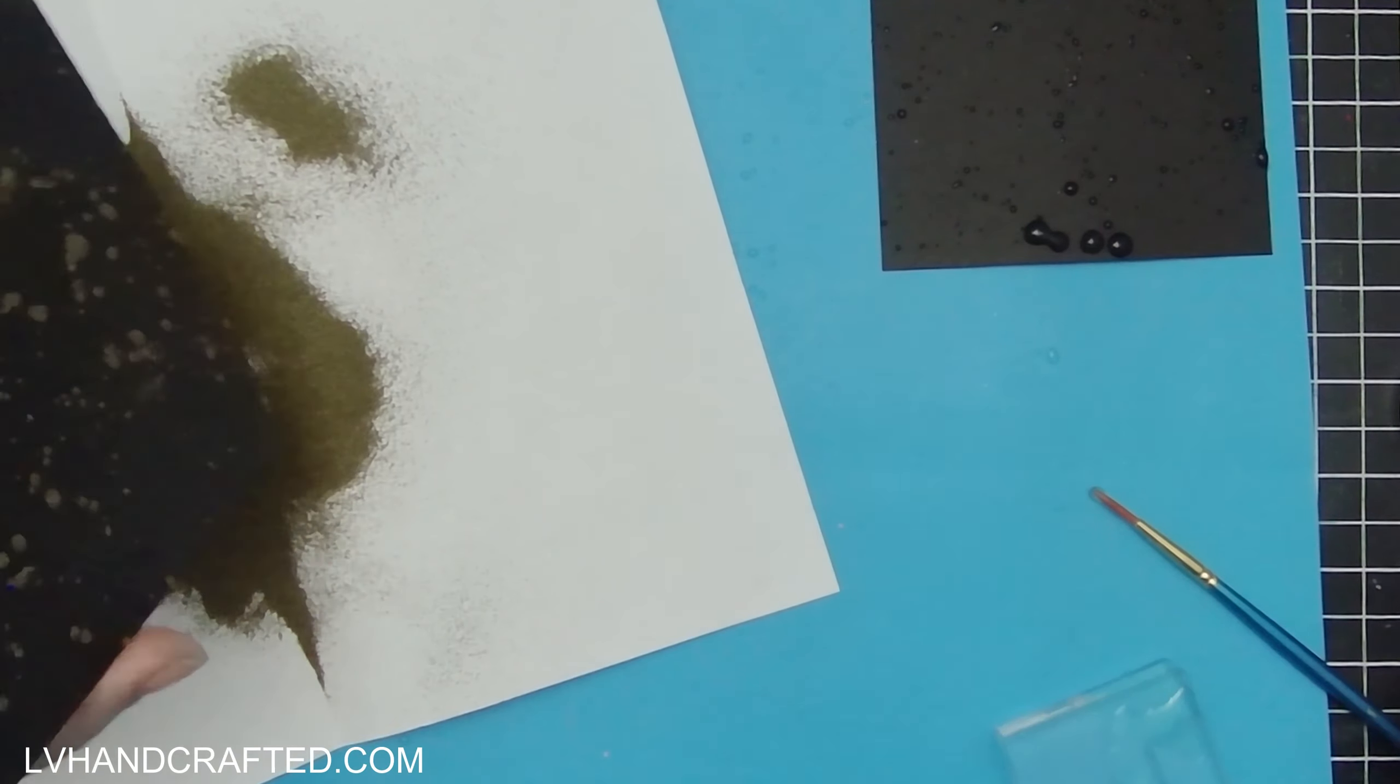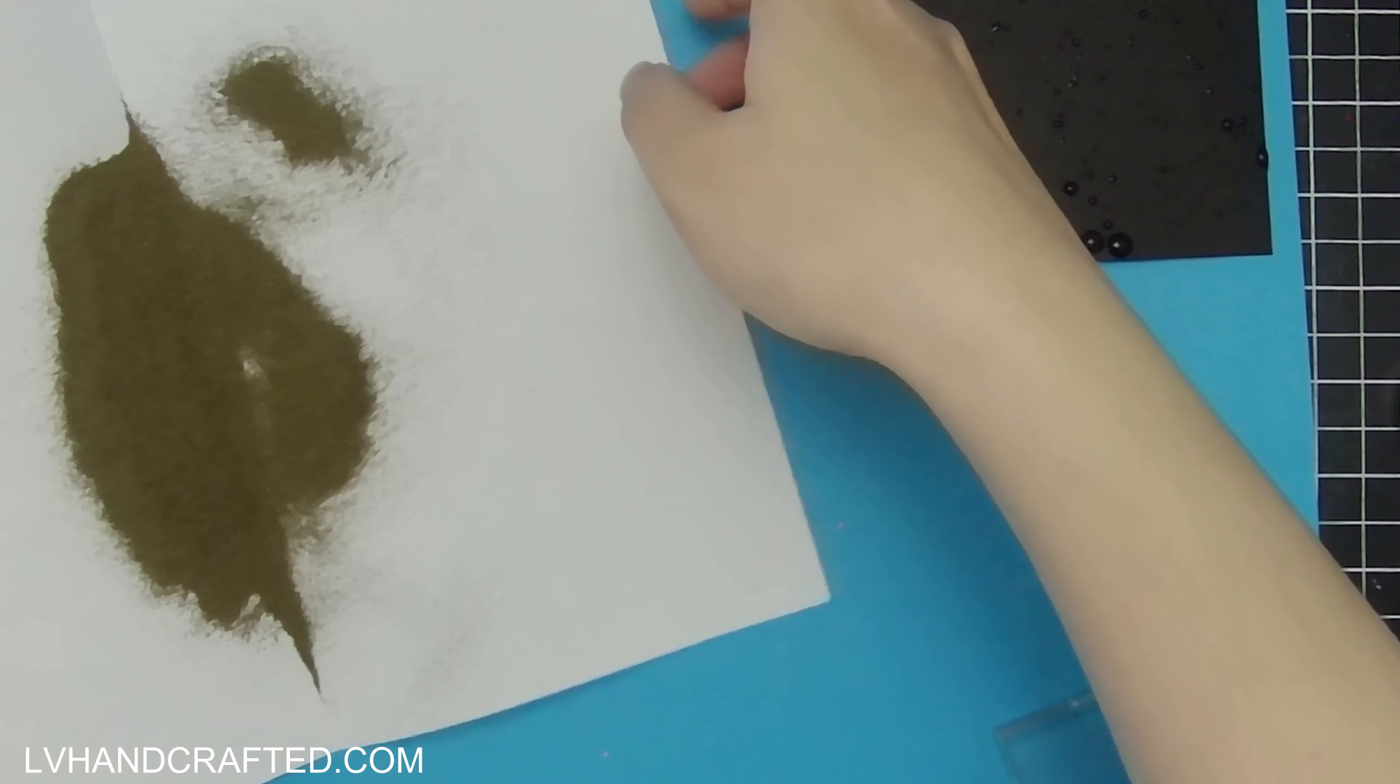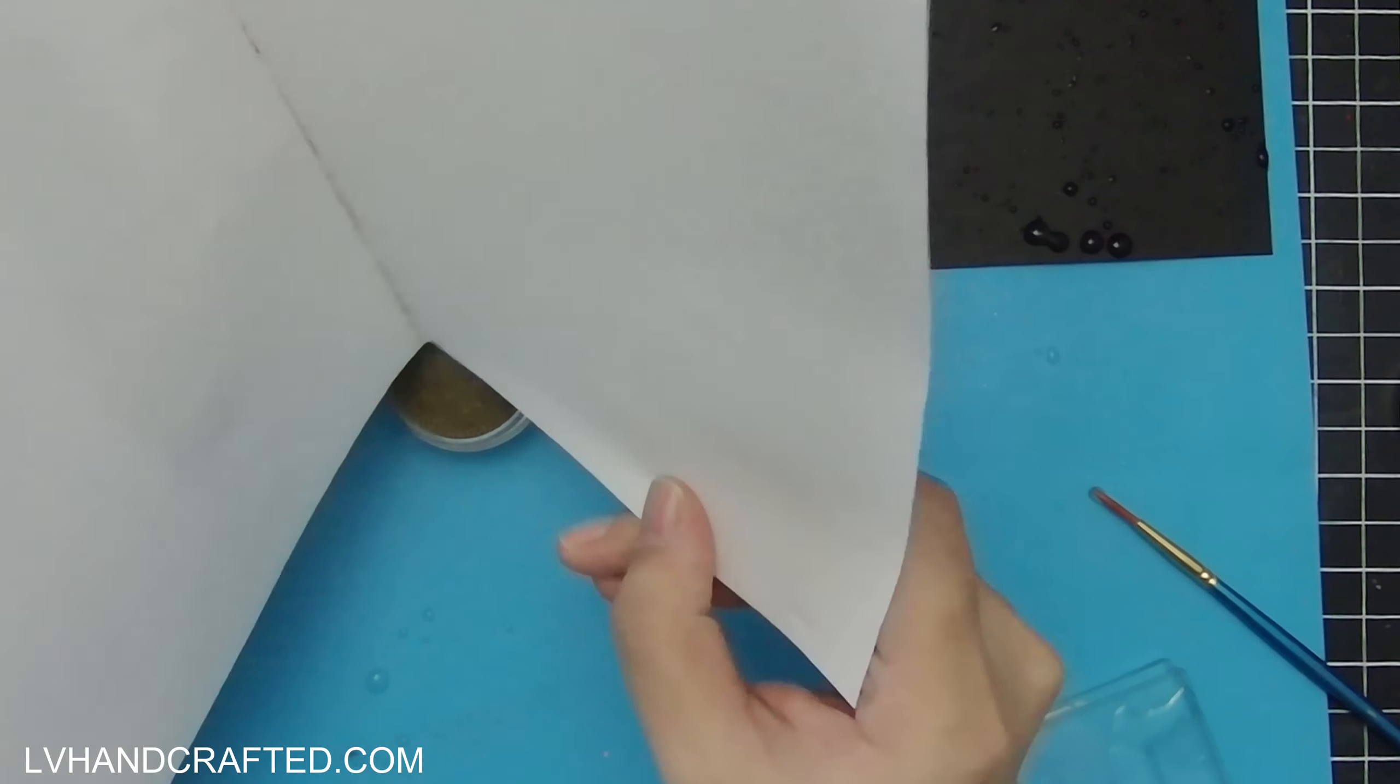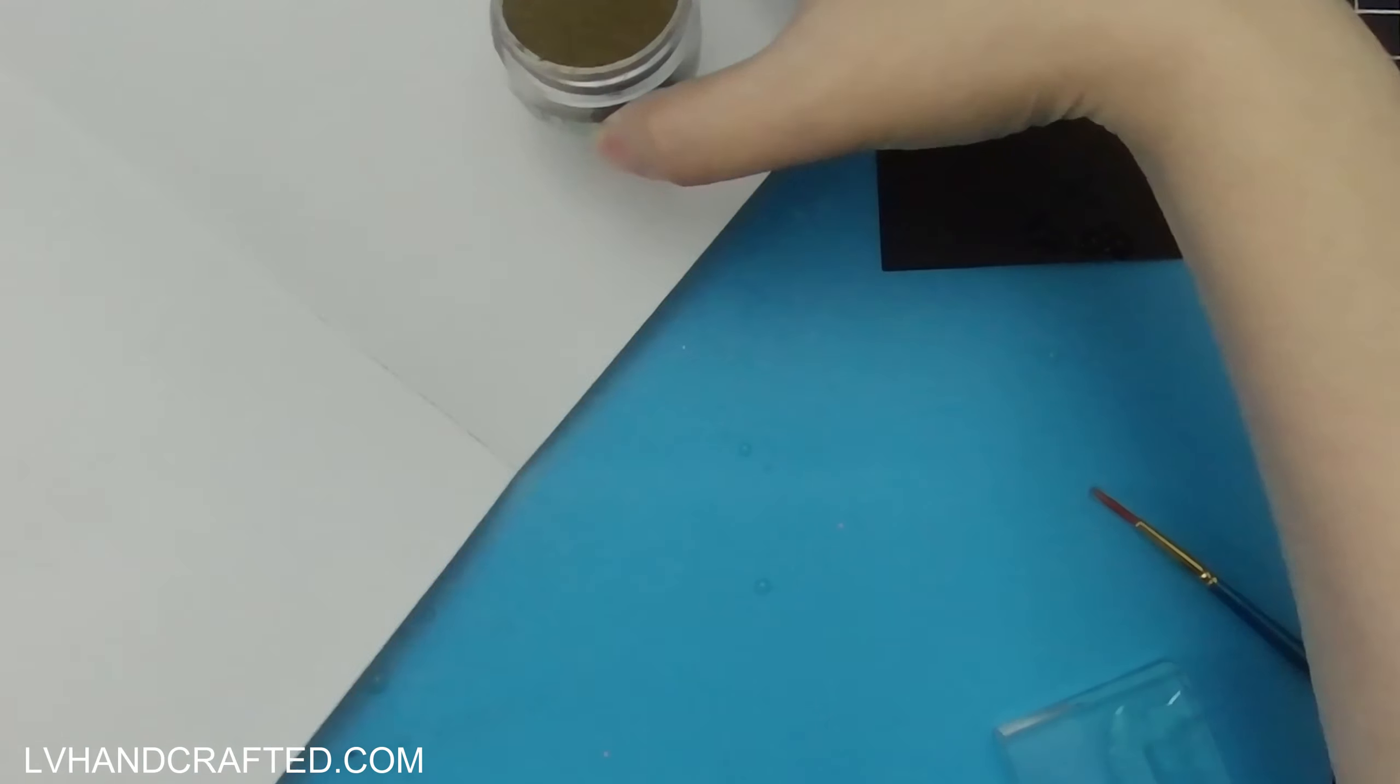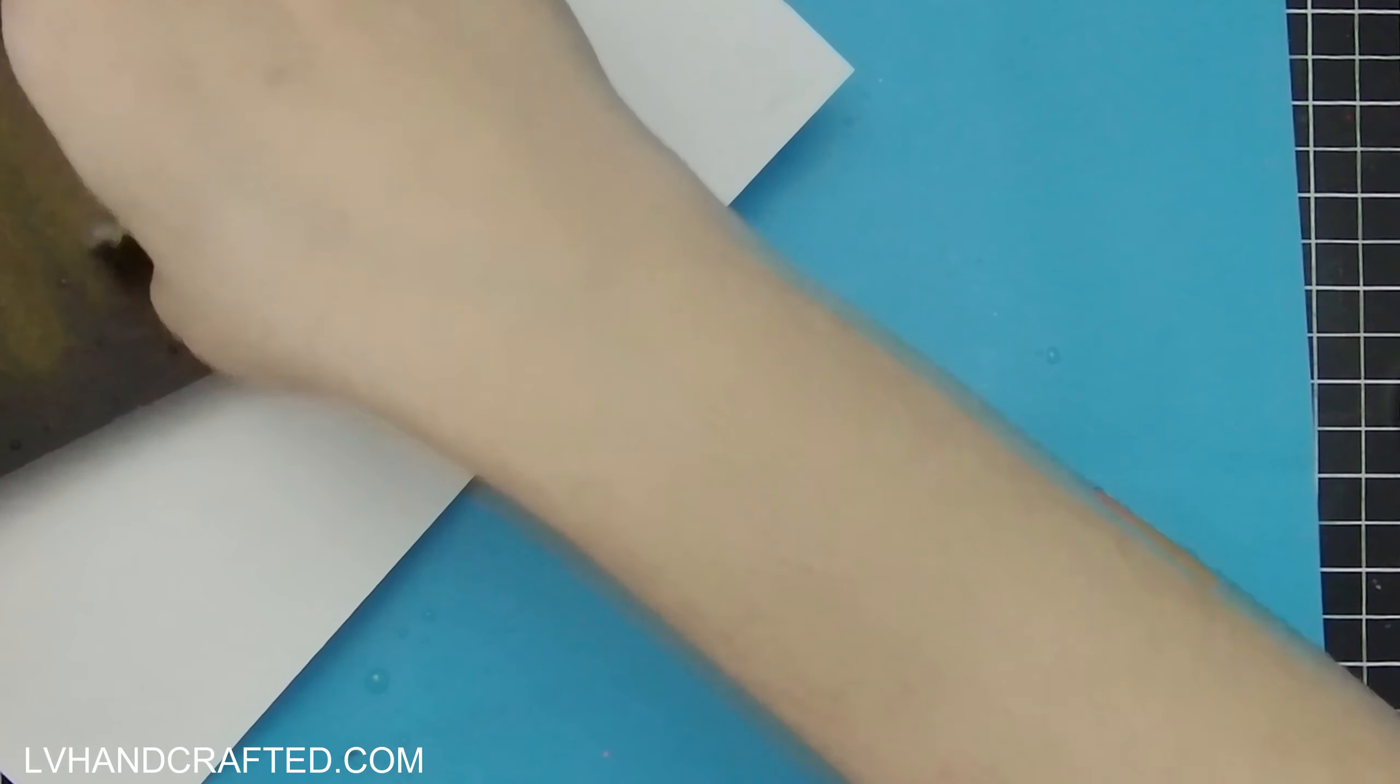So I splattered on some of that gum arabic and water solution just like you would splatter on white splatter to create a snow effect, for example. And that gives me this nice sort of organic droplet style of pattern across my entire panel.